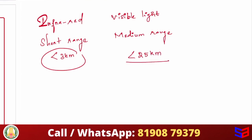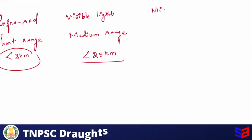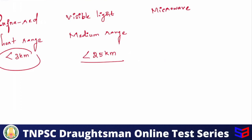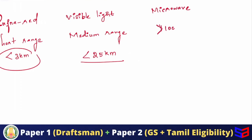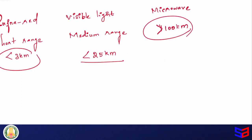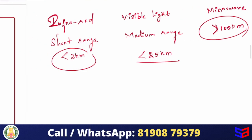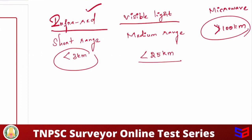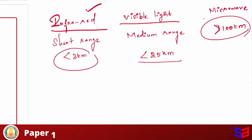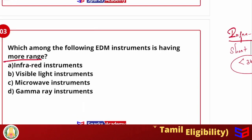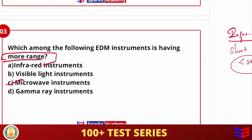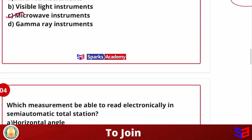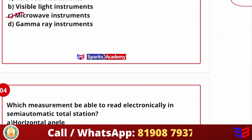So up to 25 km distance, we are going to use visible light instrument. Next is microwave. Suppose greater than 100 km, I can measure with the help of microwave instrument. This is long range. When we use infrared instrument, the instrument is distometer. Visible light is used, we use geodimeter. And microwave is used, it is tellurometer. So we can measure more than 100 km with the help of microwave instrument.